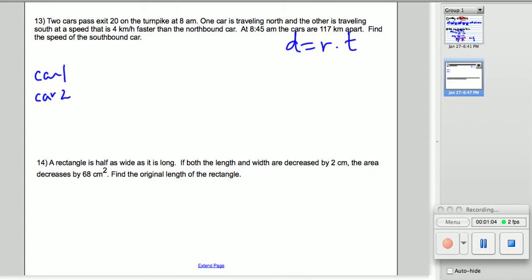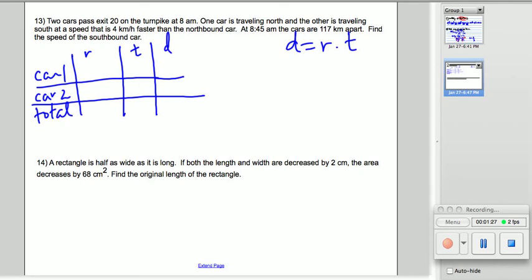that's the southbound car. And we're going to do rate times time equals distance. And here we need a total row. The total distance is 117 kilometers, so the units for distance is kilometers, the units for rate is kilometers per hour, and the units for time is hour.